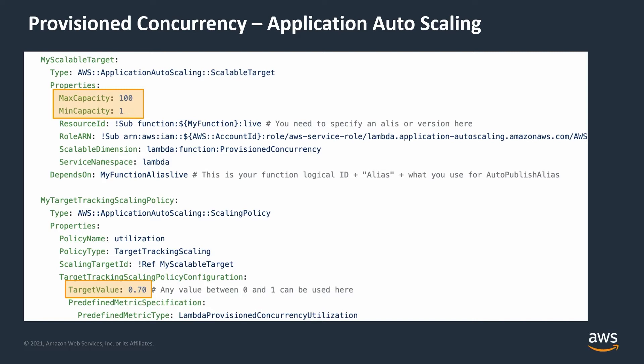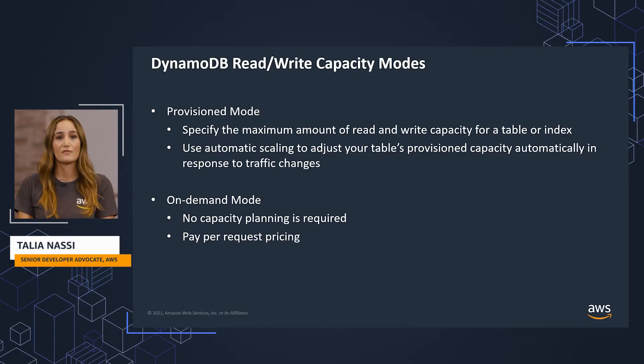So for Lambda, you have reserved concurrency, provisioned concurrency, and auto-scaling. For DynamoDB, you have two capacity modes for processing reads and writes on your tables: provisioned and on-demand. The read and write capacity mode controls how you pay for read and write throughput and how you manage capacity.